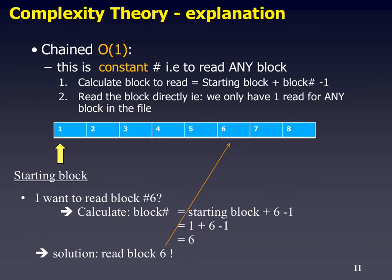Let's look at our first case: contiguous allocation. The key thing is contiguous is a constant read because it's completely random accessible. All you need to know is where the first block is and which block number you want to read. So if we read block six, we say: what's our starting block number? Which is one. We want the sixth block. We subtract one because we want to read the current block, not the block after. So one plus six minus one is six — we read it once.